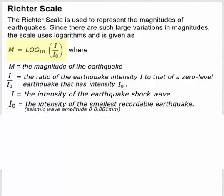And here is the formula. M equals the base 10 log of I over I sub not. Where M is the magnitude of the earthquake, that is our Richter scale number.